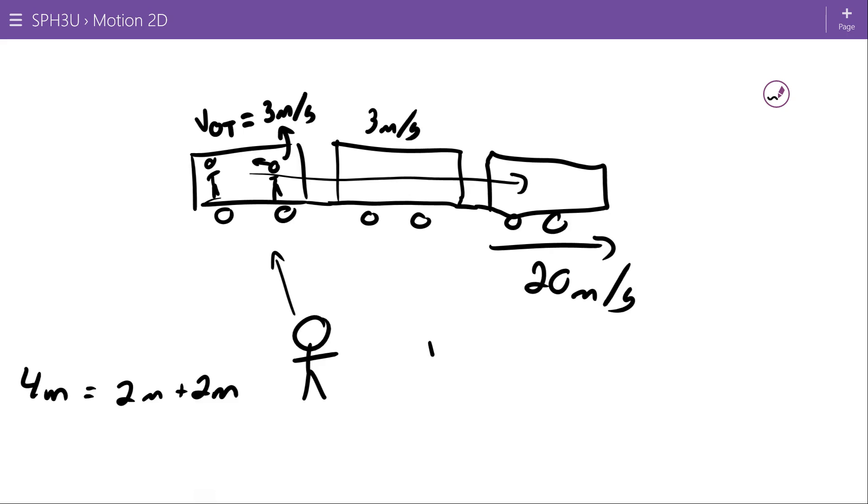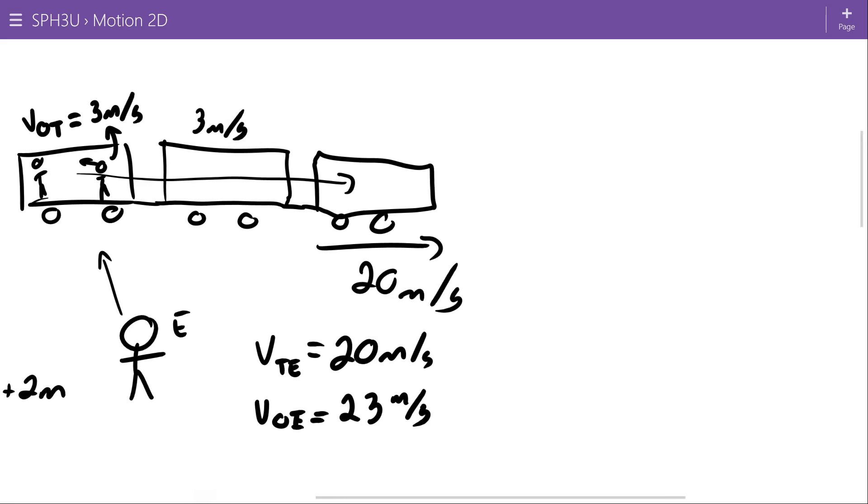From this point of view, I would see the velocity of the train as it zooms by to be 20 meters per second. And if I looked at the object relative to me, so I'm going to call this stationary. Actually, I'll call it earth because we'll assume I'm standing on the earth. The train relative to the earth and the object relative to the earth, then I can imagine that he's moving along at 20 plus the 3 that he's moving towards the front for 23 meters per second.